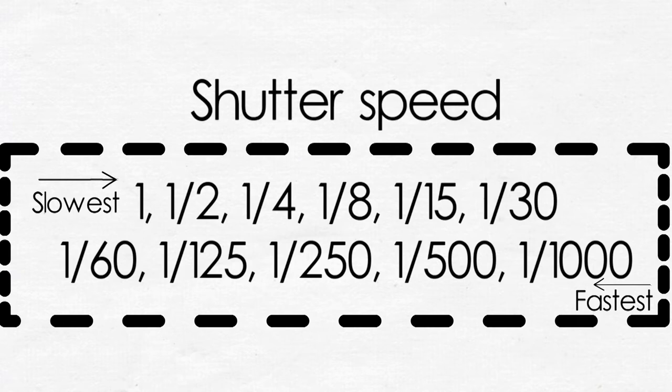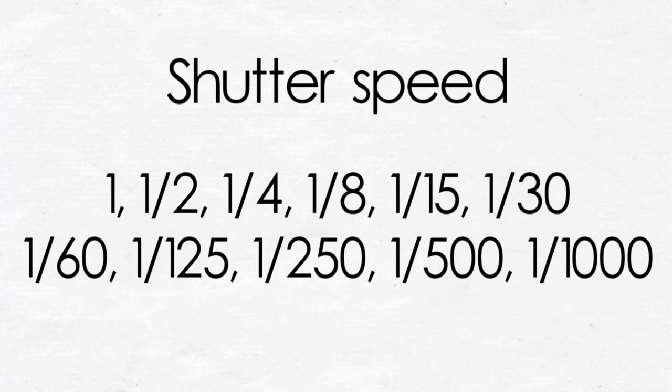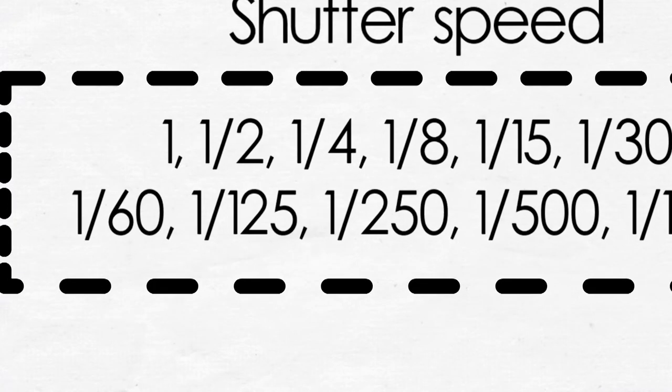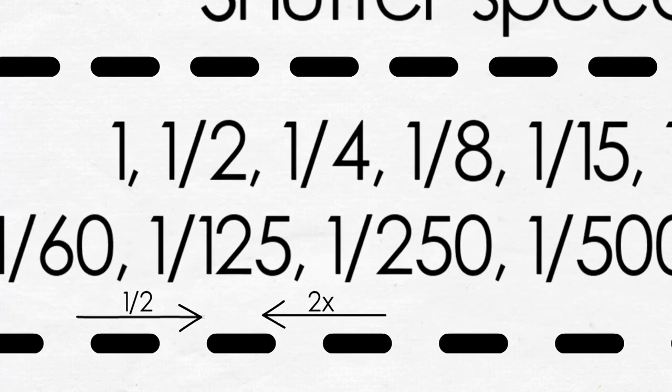Another important thing about shutter speed: every shutter speed allows half the amount of light as the preceding shutter speed, and twice the amount of light as the succeeding shutter speed. For example, 1/125 will allow half the amount of light as 1/60, and twice the amount of light as 1/250. Take any shutter speed — say 1/4: it allows half the amount of light as 1/2, and twice the amount of light as 1/8. Always half and double.